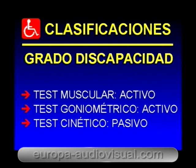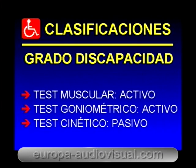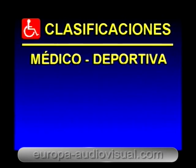La estructura básica debe constar de cuatro niveles distintos de actuación. Primer nivel: valoración del grado de discapacidad. Debemos valorar el grado de discapacidad en valor absoluto o en porcentaje del deportista, resultante de las secuelas producidas por una causa. Para ello, debemos realizar una revisión médica que constará principalmente de test muscular de ciertas áreas anatómicas (activo), test goniométrico de las articulaciones con importancia biomecánica (activo), y test cinético de las articulaciones antecitadas (pasivo).